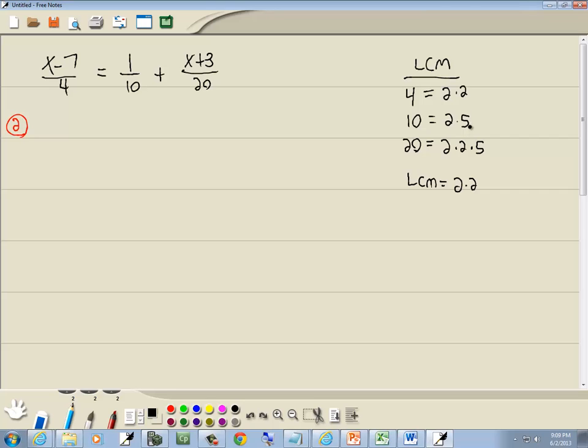And I go to my next prime, which is 5. And I'm looking for the greatest number of 5's on any single line. There's none here, 1 here, 1 here. So the greatest number of 5's on any single line is 1. 2 times 2 is 4, times 5 is 20. So our LCM is 20.